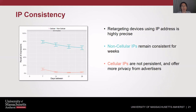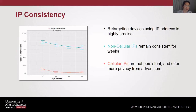Next we looked at IP consistency — how long a user keeps their IP address and whether targeting by IP will get those devices back. Non-cellular IPs, such as home Wi-Fi networks, don't reset very often. Cellular IPs on the other hand are not persistent — you likely get a new one each session. So cellular connections actually offer more privacy from advertisers than Wi-Fi.